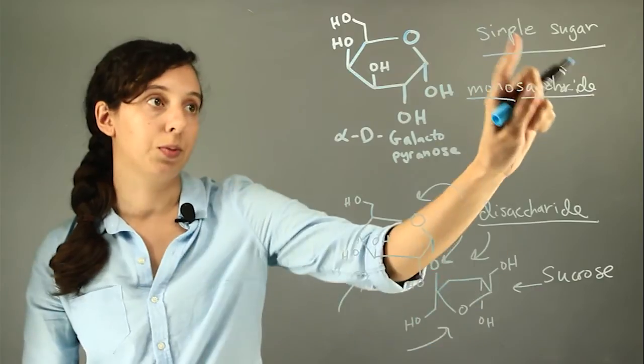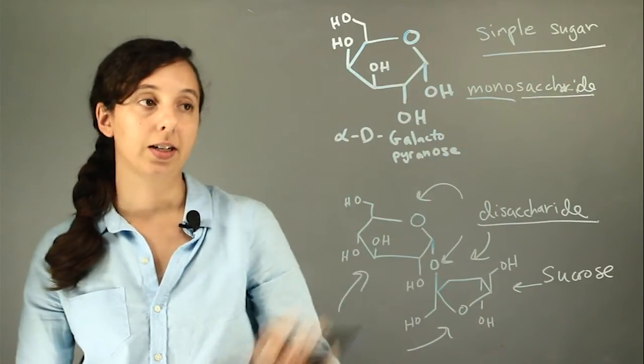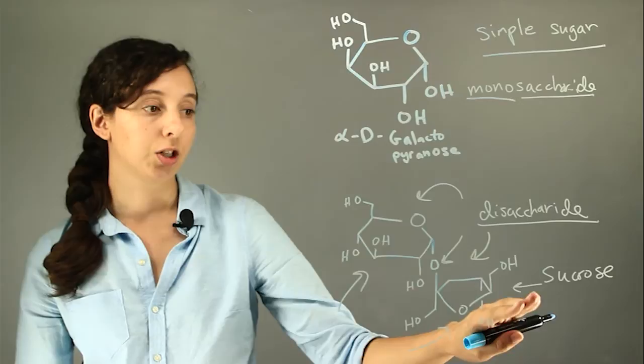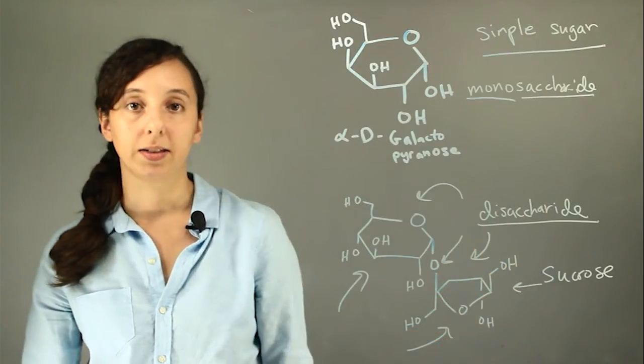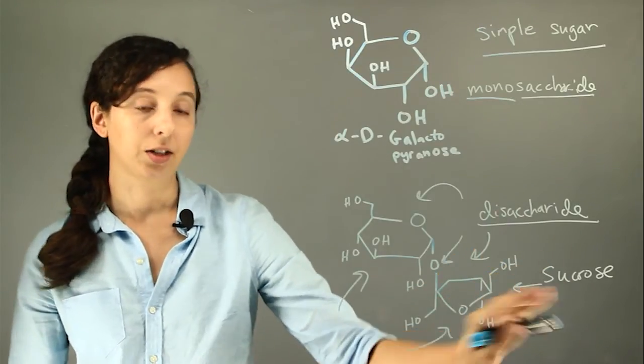So simple sugar, you can't dissect it to get any more sugars. More complex sugar like disaccharide or polysaccharide, you can like sucrose.